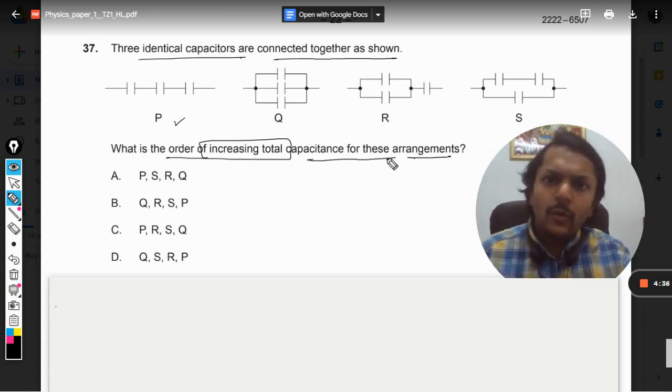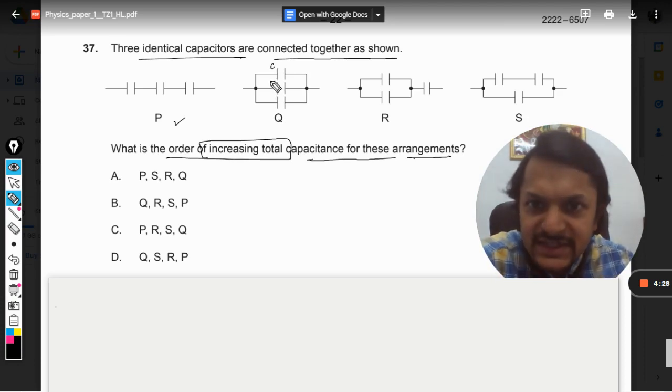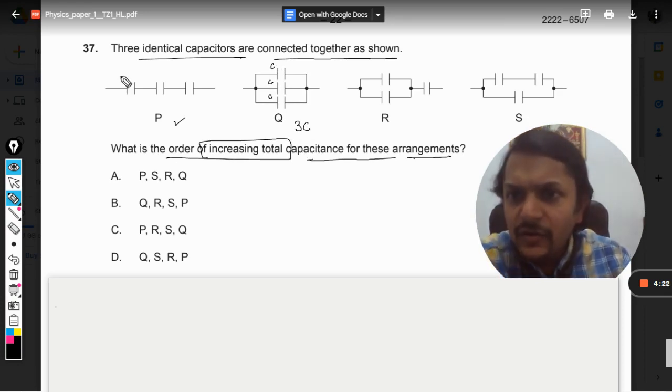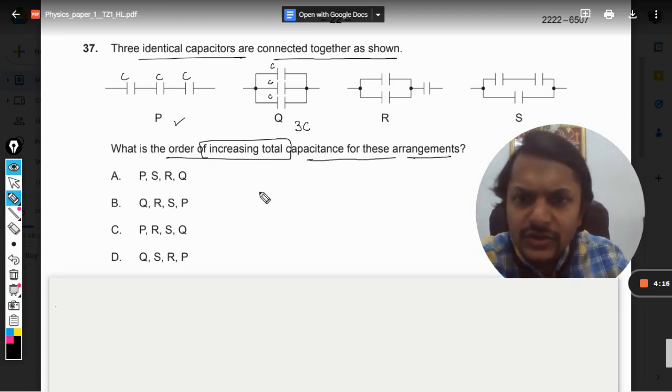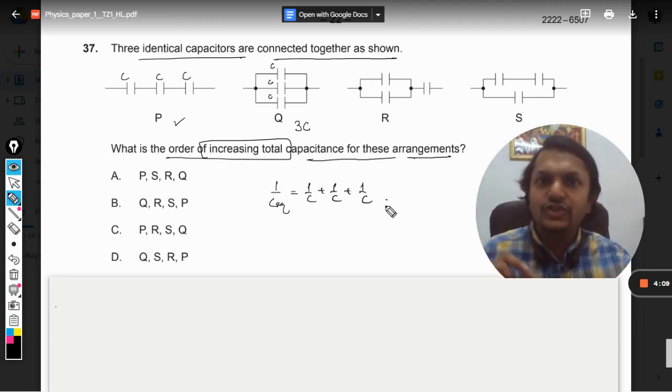So one thing we know is that in the case of capacitors in parallel, what we do is we add all of them. So if this is C, C, and C, we know this is going to come out to be 3C. And when all the capacitors are connected in series, the simple formula can be taken to be 1/C + 1/C + 1/C.